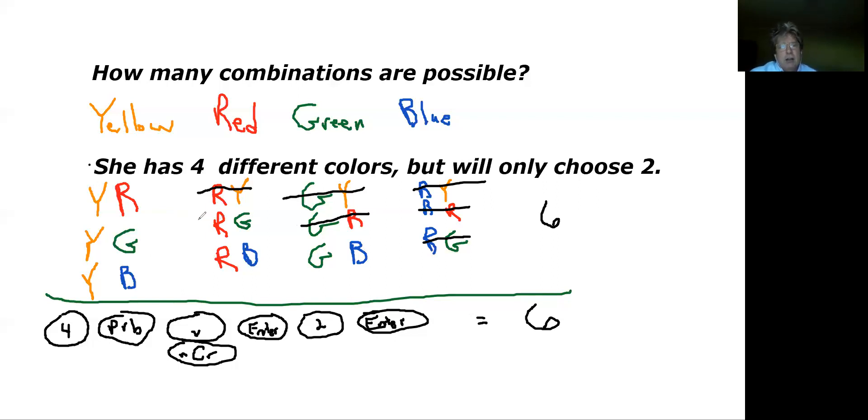Now there is a way to do it on a calculator because this falls under probability. In a calculator, if you want to do this problem—and the key is it's a combination problem, and combination tells me this is a probability question—to do probability on the calculator, the four is the number of choices, so that goes in first.